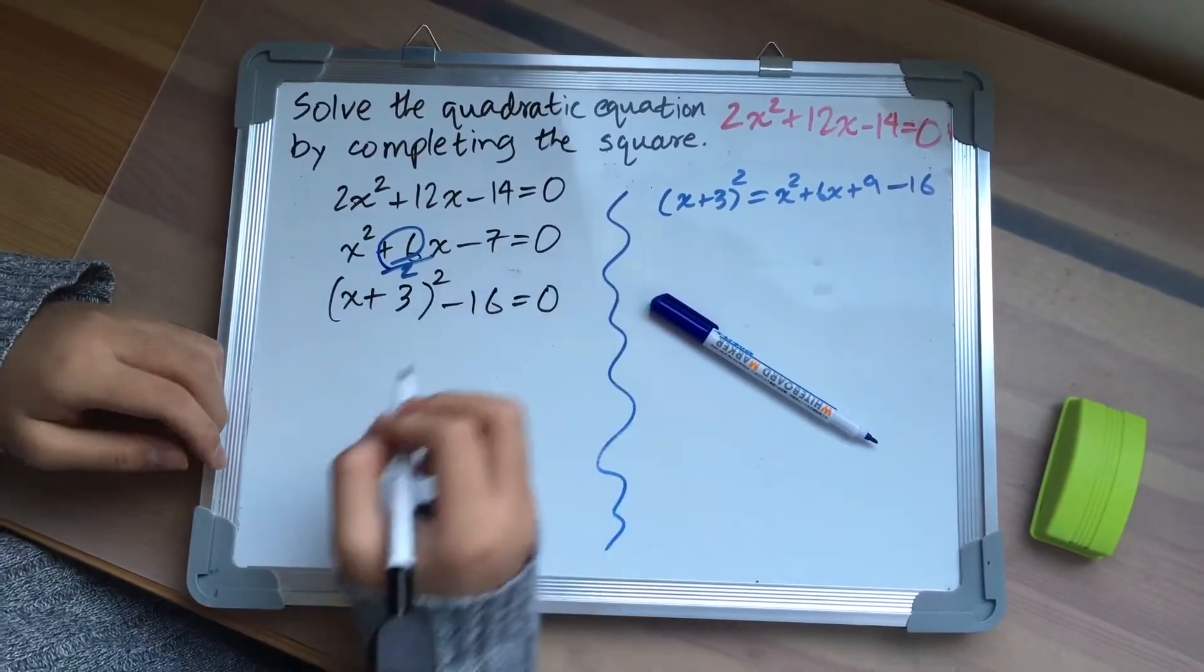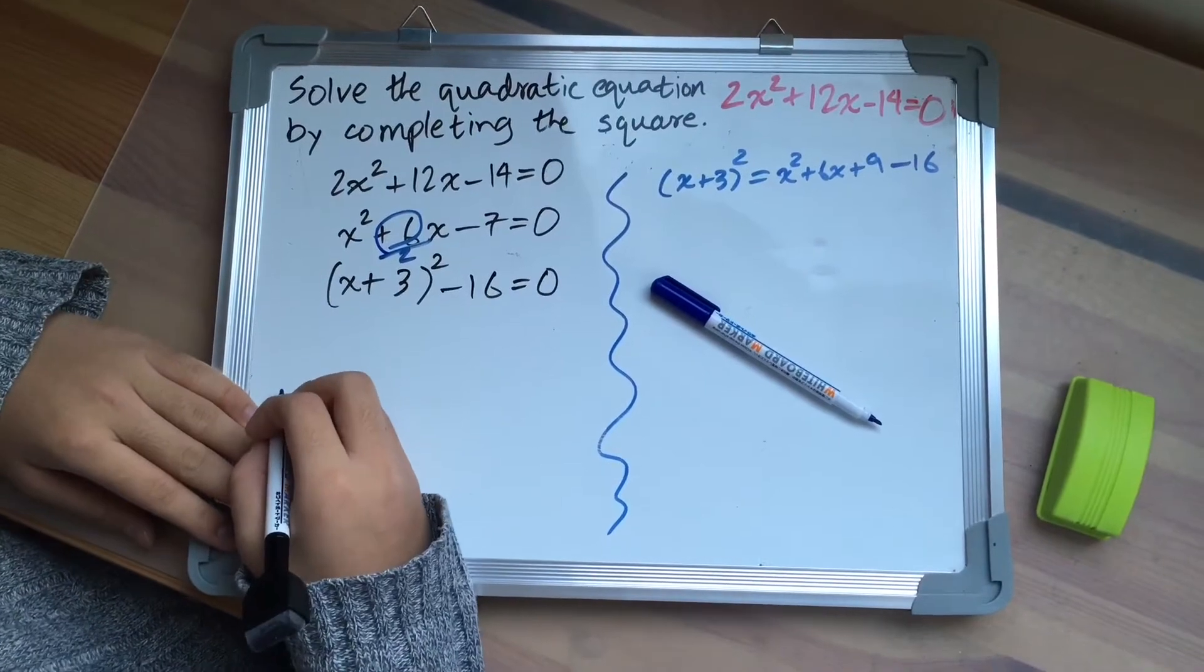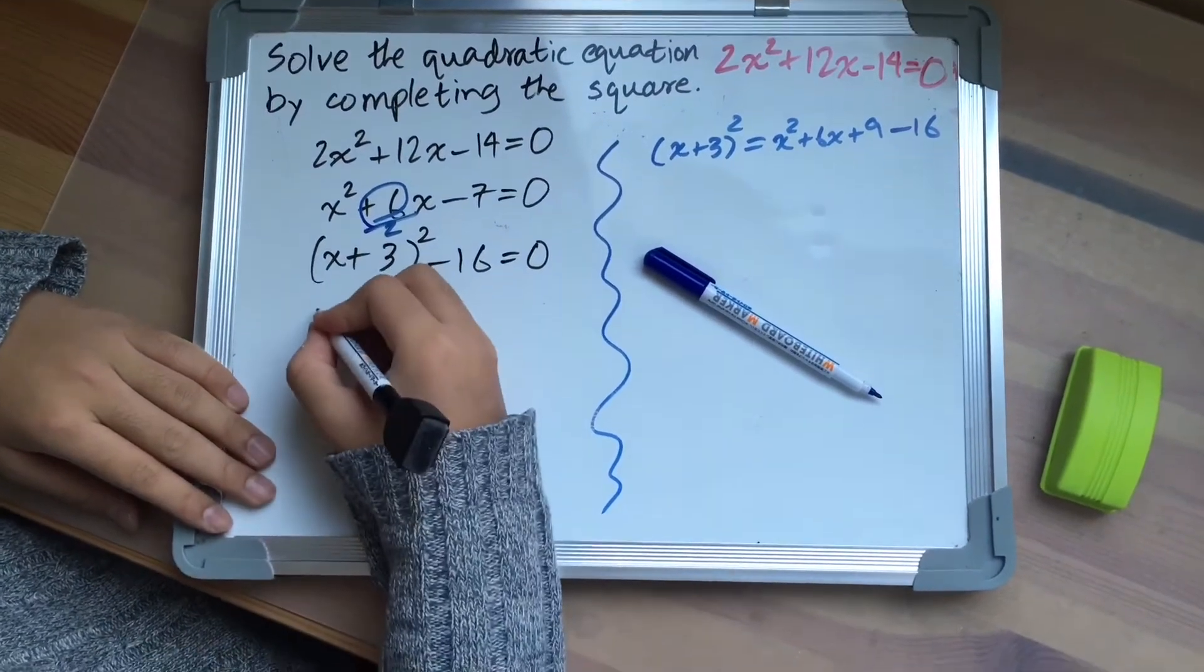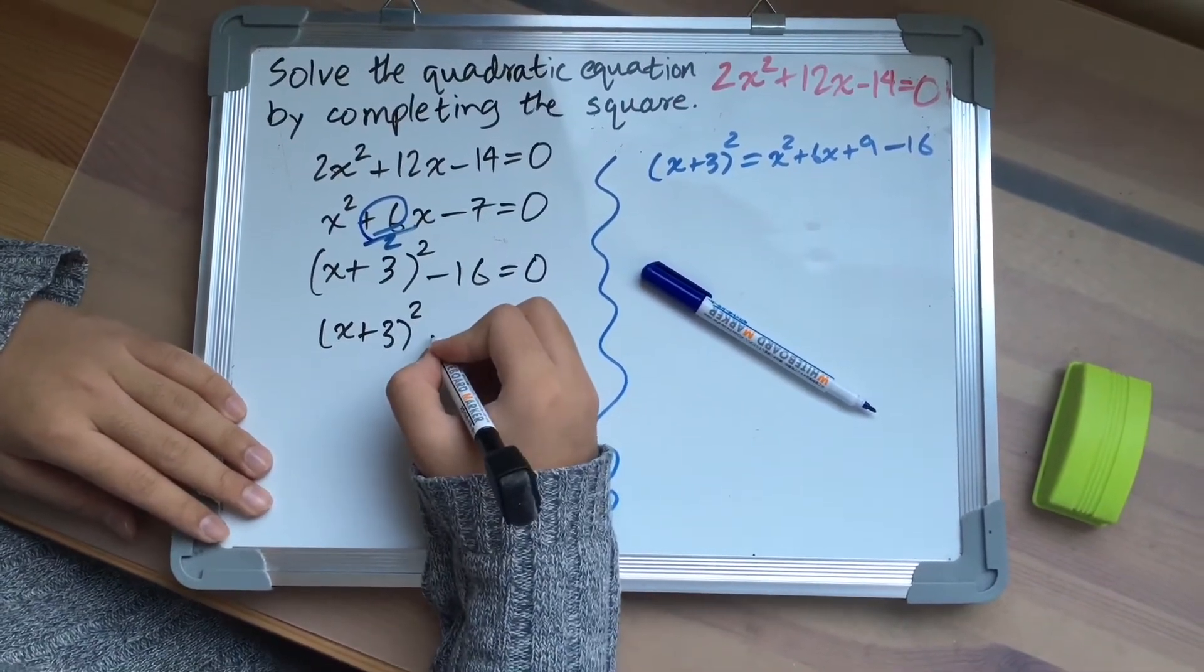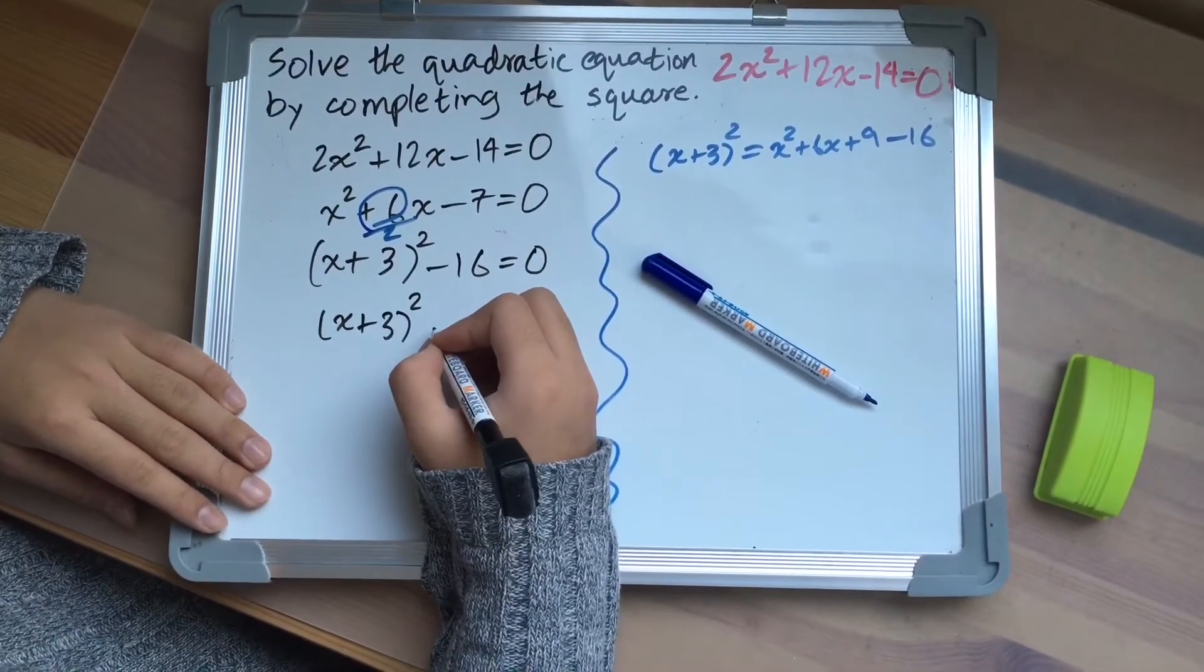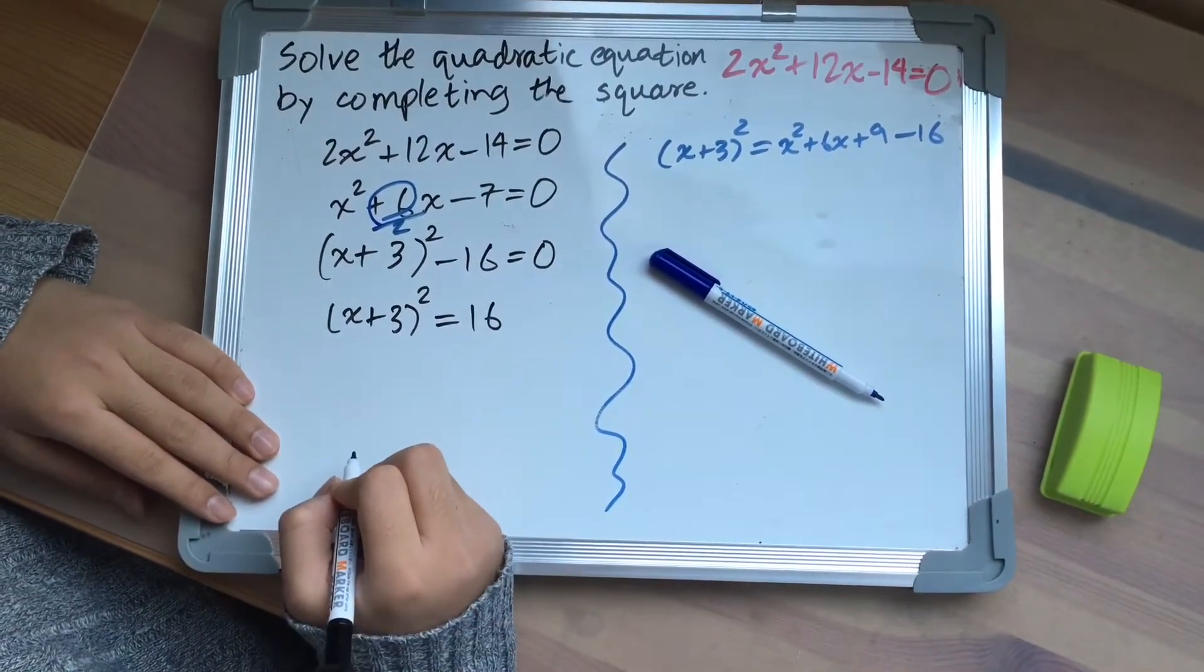And now you have completed the square. The next step is to solve it. So you will get x plus 3 the whole square. And if you add 16 to both sides, you'll get equal to 16.